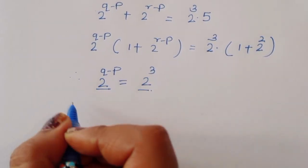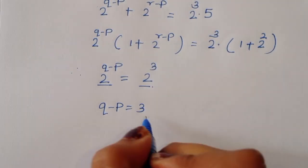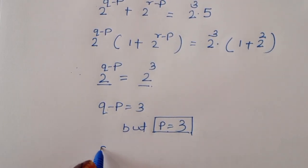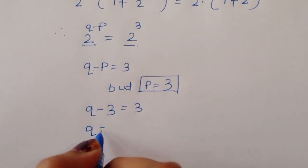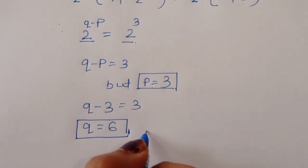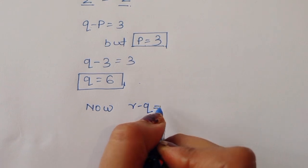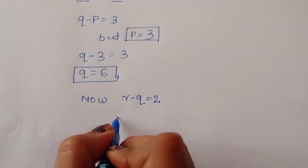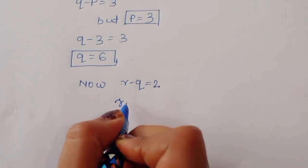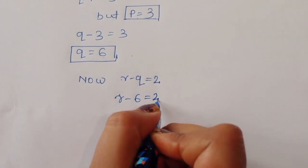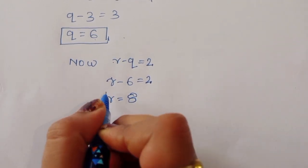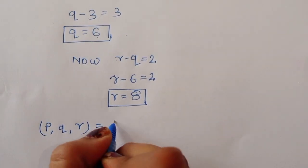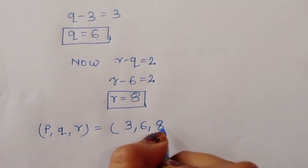Since the bases are the same, Q minus P equals 3. But P equals 3, so substituting: Q minus 3 equals 3, therefore Q equals 6. Next, R minus Q equals 2, so R equals Q plus 2, which is 6 plus 2, that is 8. So we have P equals 3, Q equals 6, and R equals 8.